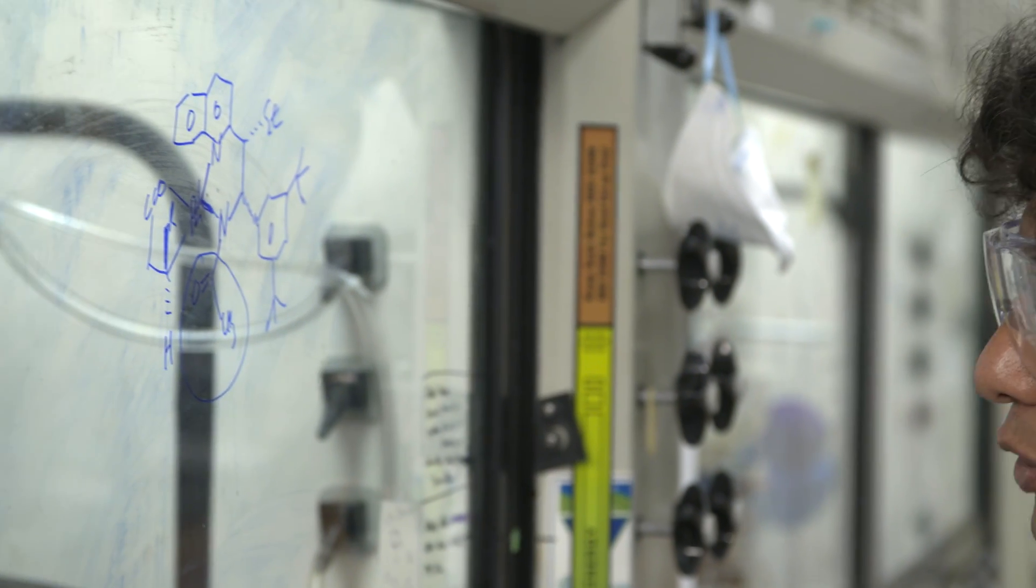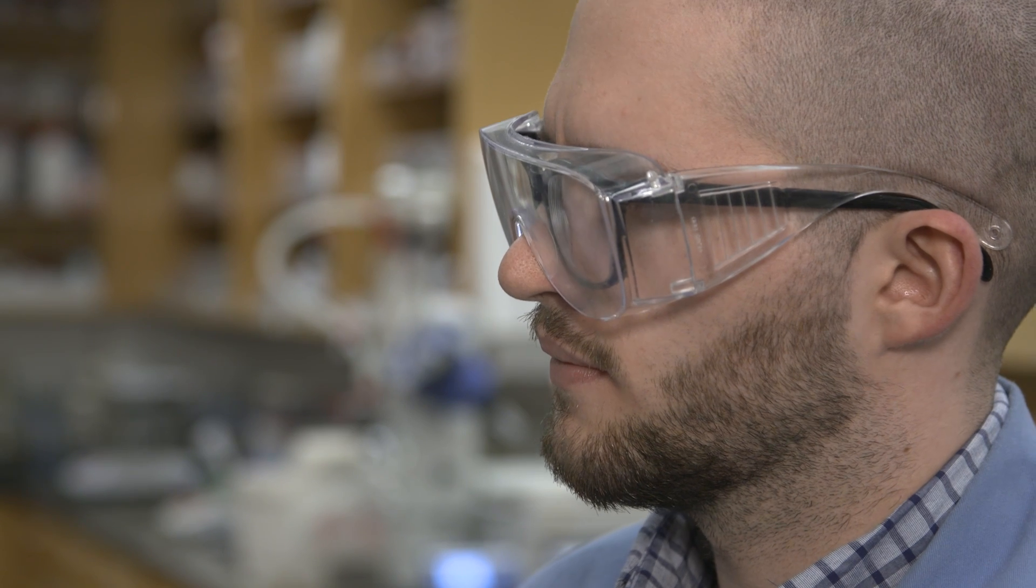Usually, organic chemists use metal to break a bond, but CH bonds do not have very much affinity to the metal, so the metal cannot interact with them.